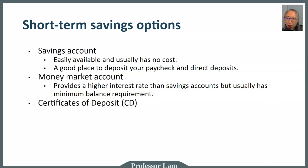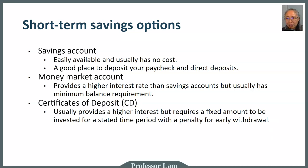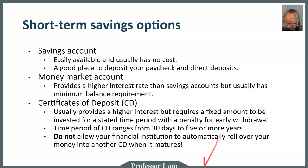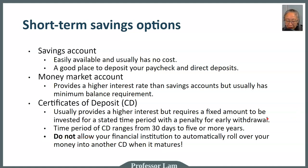The next most common type of savings option is a certificate of deposit, or CD. CDs usually have a higher interest rate, but you have to leave your money there for a fixed time period — it can be six months, a year, or two years. The most important thing to keep in mind is that when you set up a CD, do not allow your institution to automatically roll over your CD when it matures, because interest rates could change and the institution may not give you the best rate on renewal. Those are the three most common options for your short-term savings.